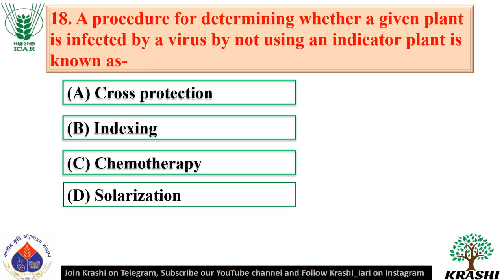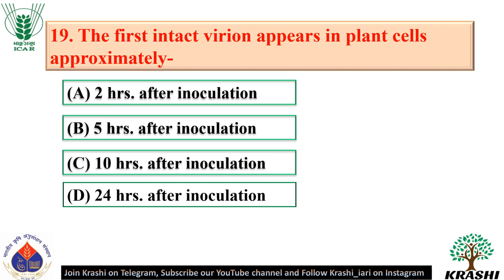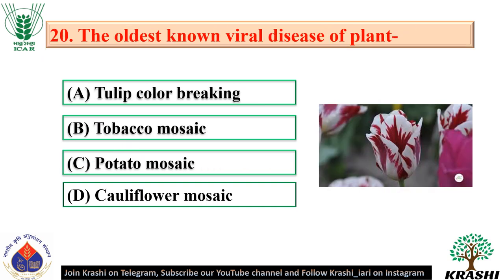Question number 18: A procedure of determining whether a given plant is infected by a virus without using an indicator plant is known as indexing — option B. Question number 19: The first intact virion appears in plant cells approximately 10 hours after inoculation — option C. Question number 20: The oldest known viral disease of plant is tulip color breaking — option A.